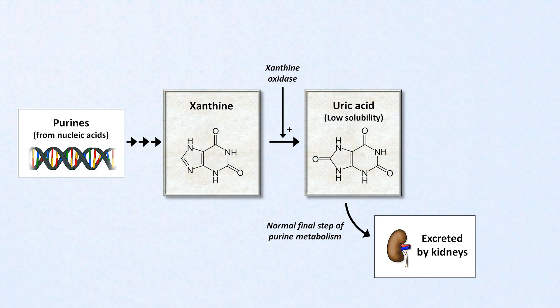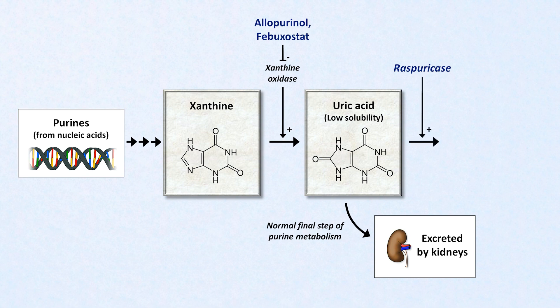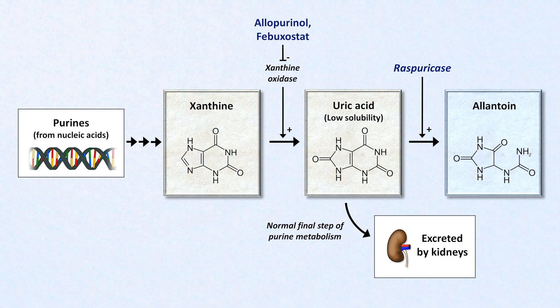To slow down its production, we can use allopurinol, or less commonly febuxostat, both of which inhibit xanthine oxidase. Of course, this increases levels of xanthine, which can also be nephrotoxic. To speed up clearance, we can use rasburicase, which is a recombinant form of an enzyme called uricase, present in much of the animal kingdom but not in primates. Rasburicase converts uric acid to a compound called allantoin, which has high solubility and can be more readily excreted via the kidneys without damaging them. A major benefit of rasburicase is that it works much faster than the xanthine oxidase inhibitors to lower uric acid, but unfortunately is much more expensive.